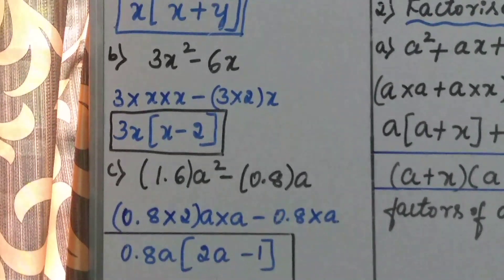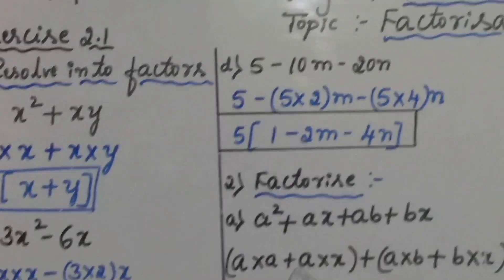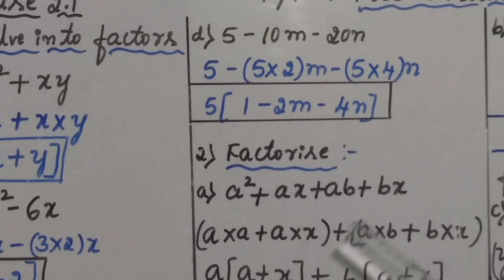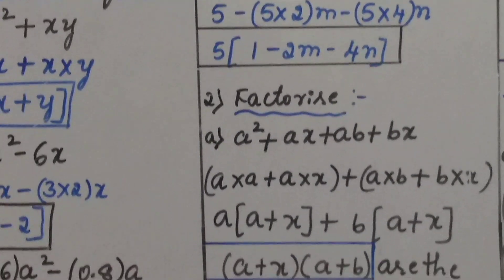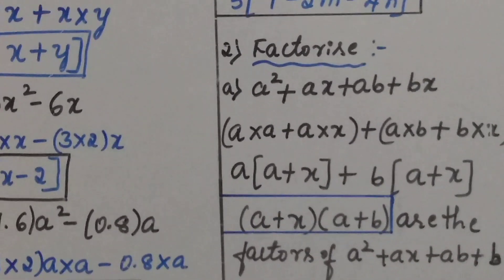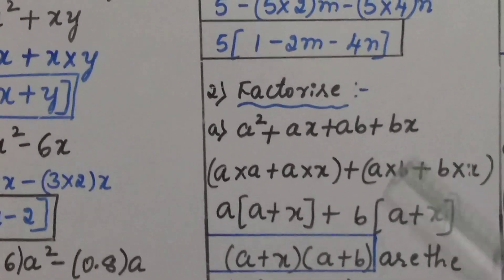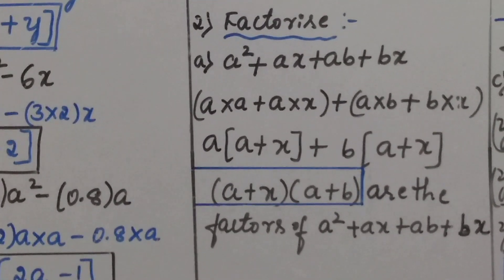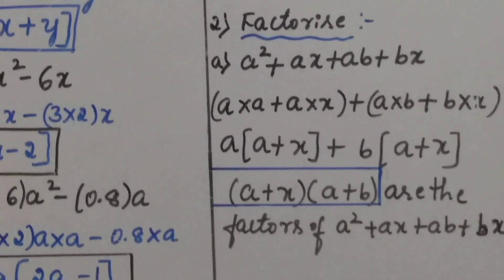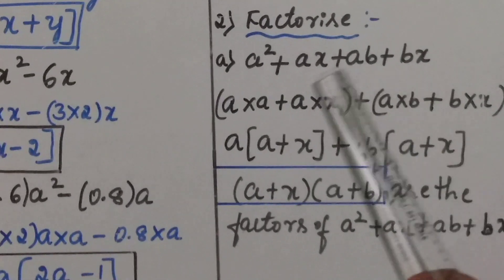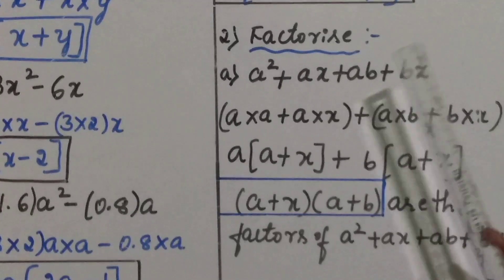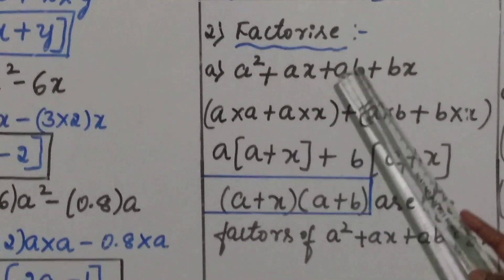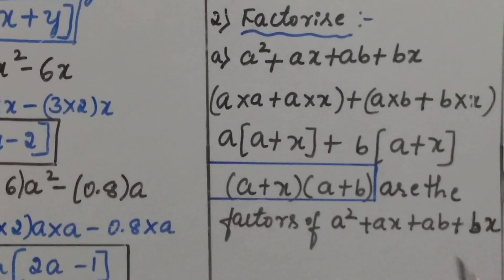Moving on to the second question — here also, factorize and find the factors: a square plus ax plus ab plus bx. Observe carefully children. How many terms are there? 4 terms. The method here is factorization by grouping — first you arrange the terms into suitable groups. With 4 terms, you make 2 groups: the first group is a square plus ax, and the second group is ab plus bx.